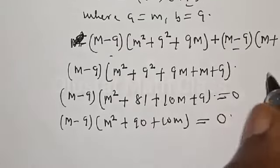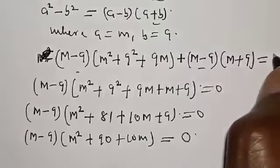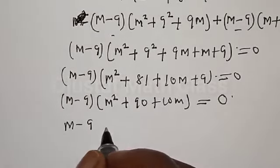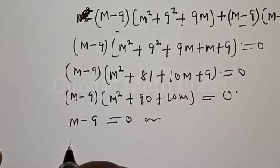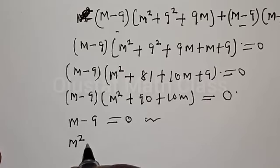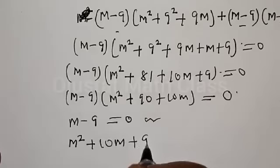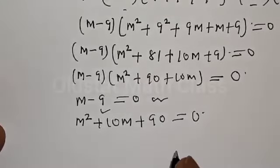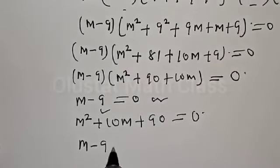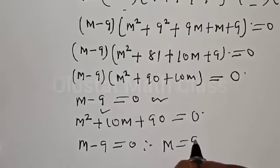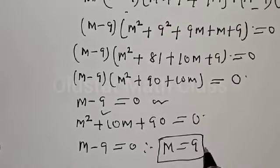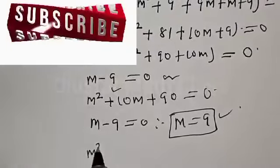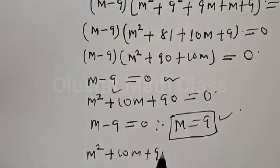Here, each factor is equal to 0. Therefore, we have M minus 9 equal to 0, or M² plus 10M plus 90 equal to 0. From the first equation, M minus 9 equals 0, therefore M is equal to 9. In the second case, we have M² plus 10M plus 90 equal to 0, which is a quadratic equation.